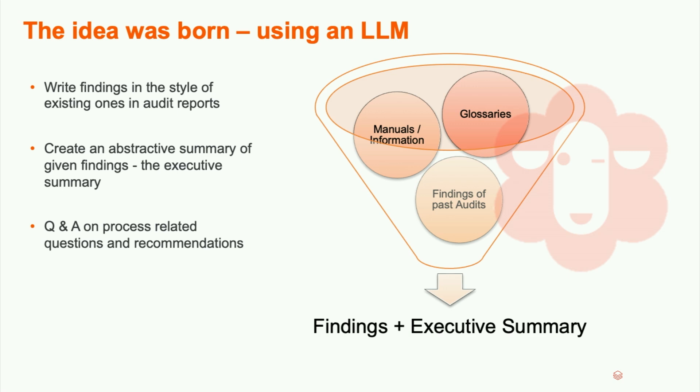The idea is to make this whole writing piece easier — to make it sound as if it was written by one person — by using an LLM, because the LLM uses the same style. If you want to change the style, you can even fine-tune it. The idea is that auditors first write just bullet points, something very simple, and let the LLM enhance it and write the actual nice text. After we have all our findings, we can also use an LLM to summarize all that into the executive summary, and that can be a two-stage process.